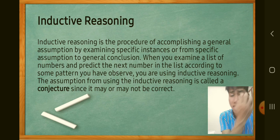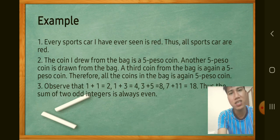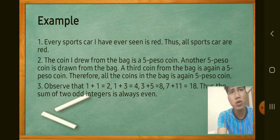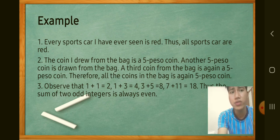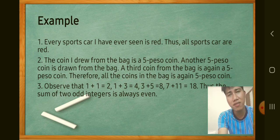When we use inductive reasoning, the conclusion is called a conjecture, since it may or may not be correct. Not all conclusions from inductive reasoning are always correct. Example: every sports car I have ever seen is red — therefore, all sports cars are red. This conclusion is a conjecture because it may be true or false.